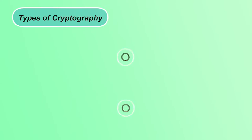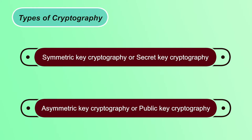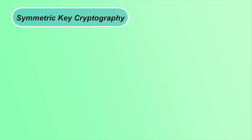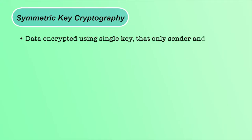There are two types of cryptography. The first one is symmetric key cryptography, also known as secret key cryptography. The other one is asymmetric key cryptography, also known as public key cryptography. In symmetric key cryptography, only one key is used for both the encryption and decryption process, and this key should be secret between the sender and receiver.